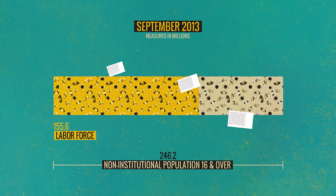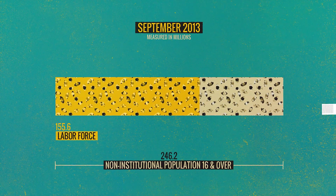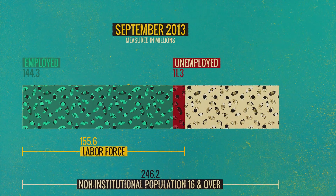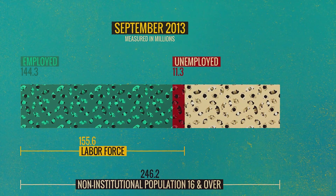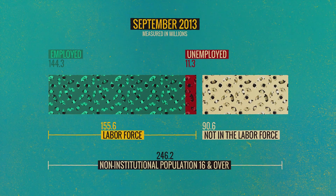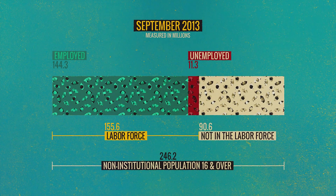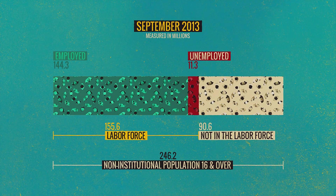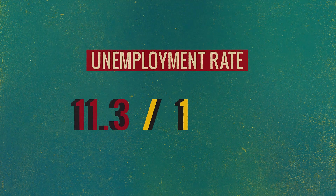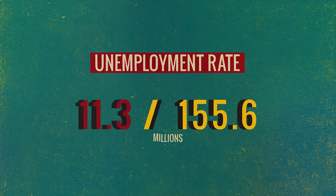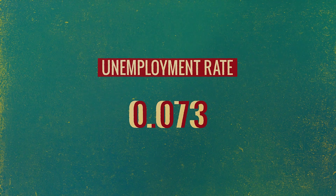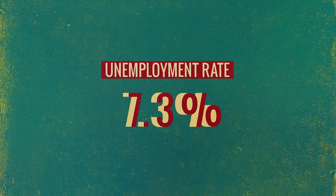From the survey, the government determined that 144.3 million were employed and 11.3 million were unemployed. We also know that 90.6 million were not in the labor force at all — they were part of the population 16 and over, but were neither employed nor looking for work. To get the unemployment rate, you divide 11.3 by 155.6 million, which gives a fraction of 0.07, reported as a percentage — about 7%. That is the unemployment rate.